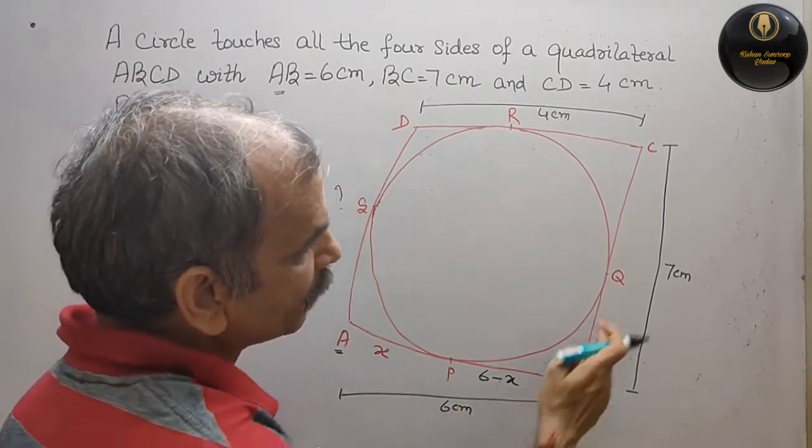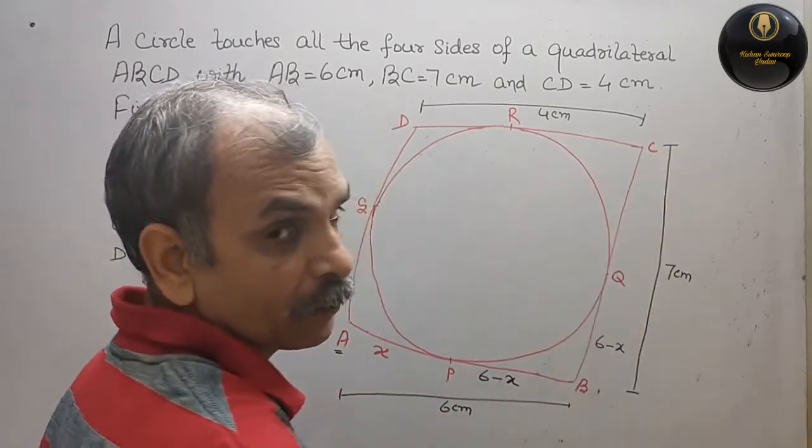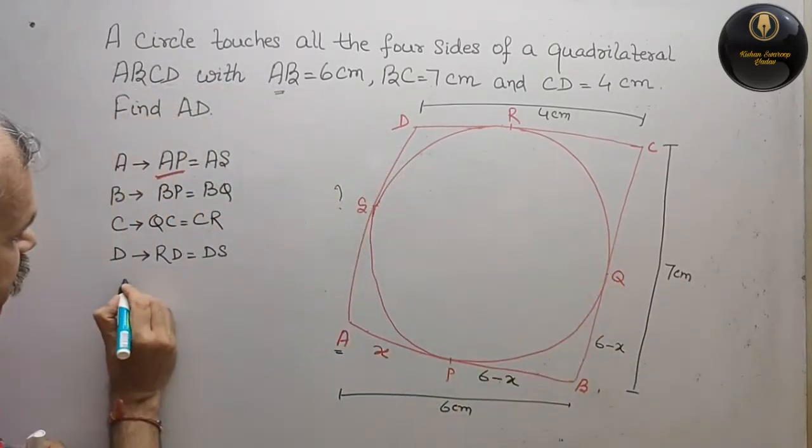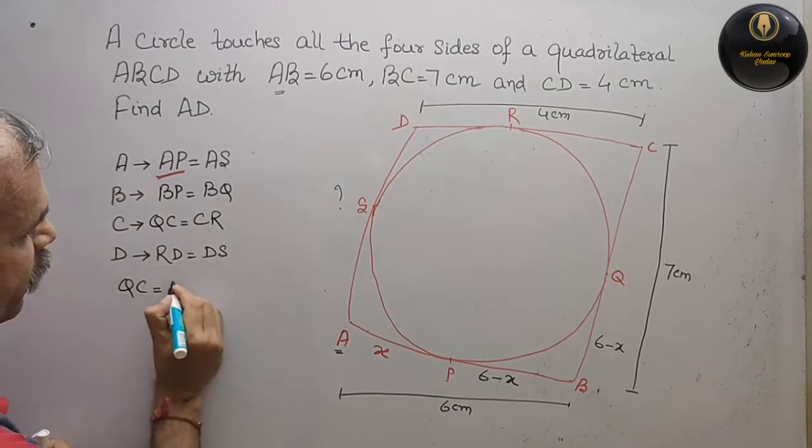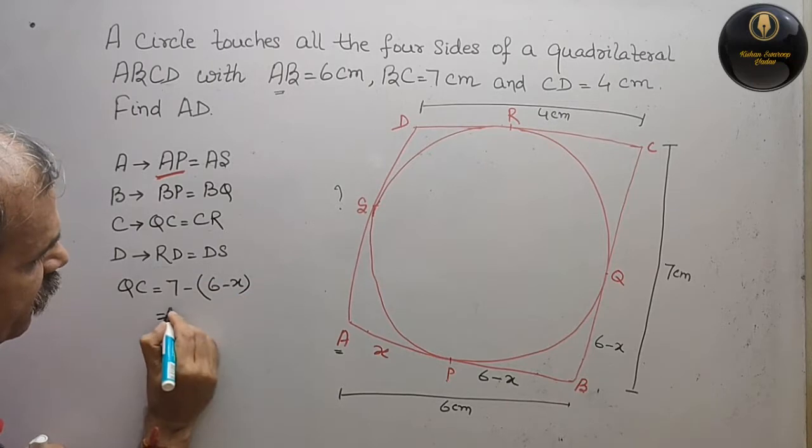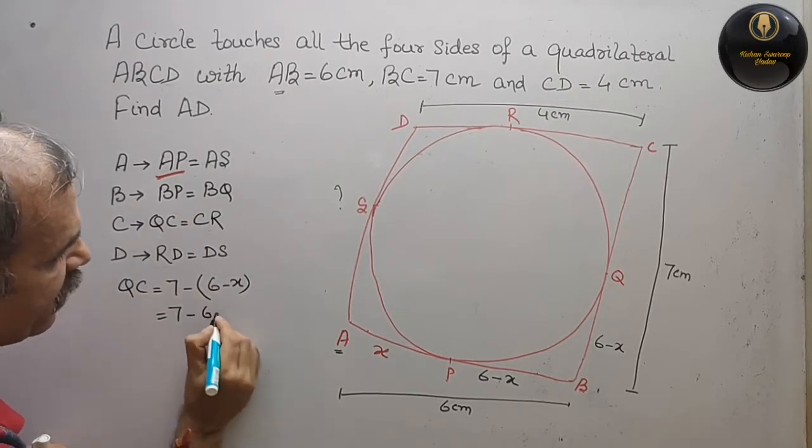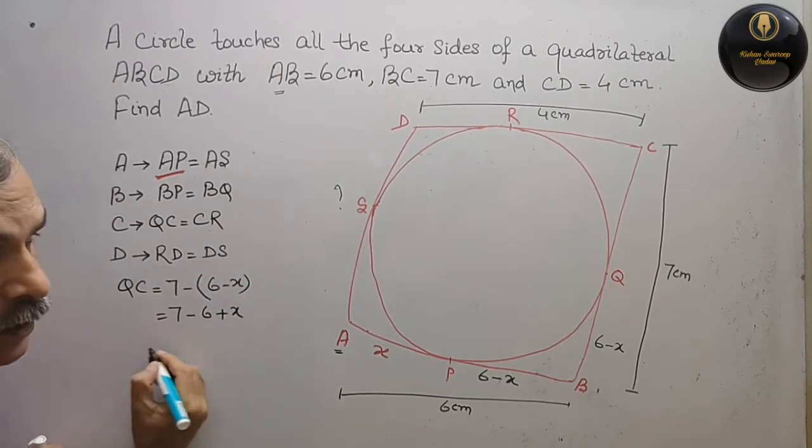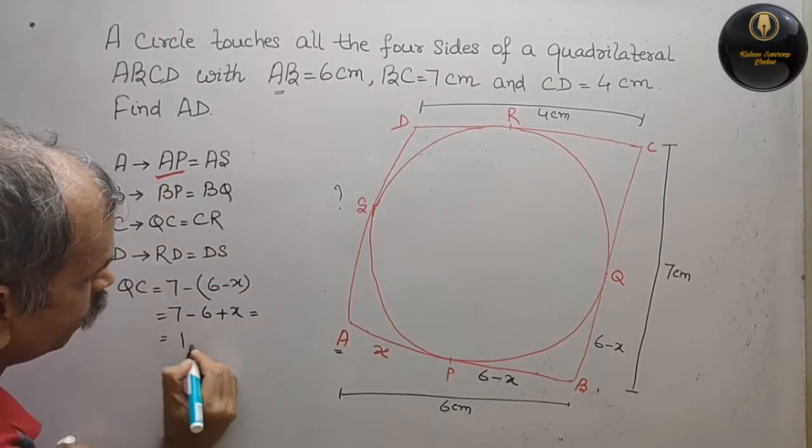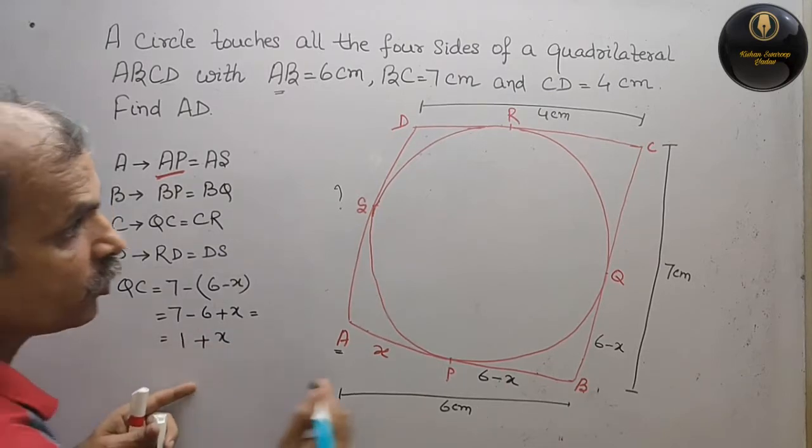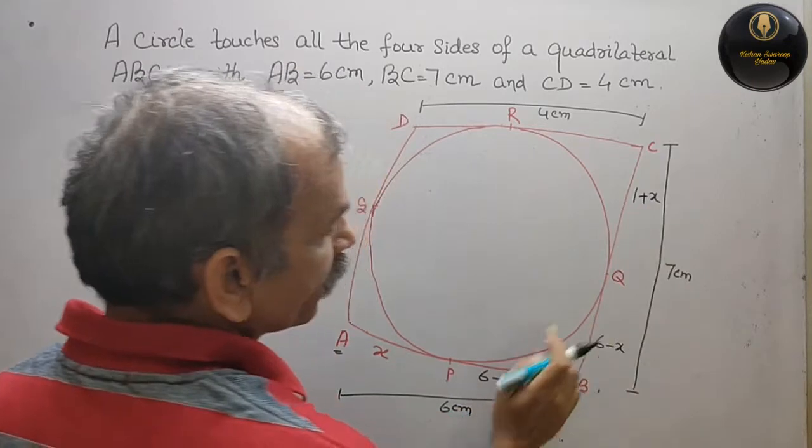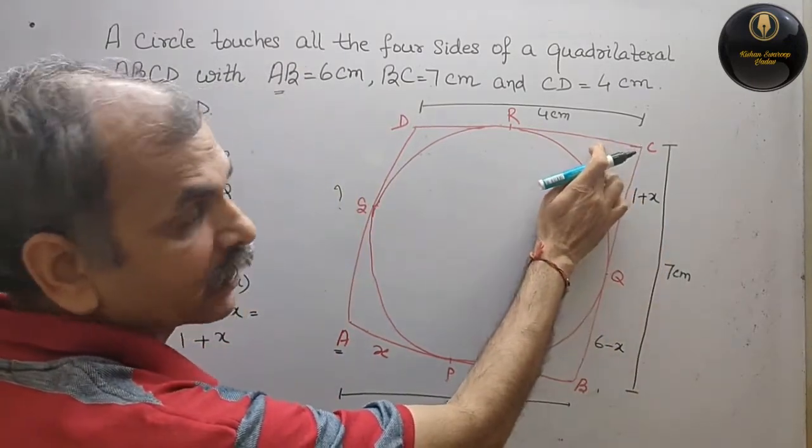Now, your QC will be 7 minus this value. So QC is equal to 7 minus (6 minus X). That is equal to 7 minus 6 plus X. That is equal to, 7 minus 6 is 1. So, 1 plus X. So this is your 1 plus X. If this is your 1 plus X, this is also 1 plus X.